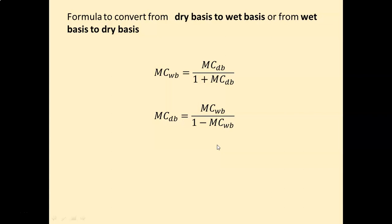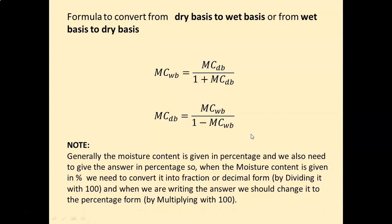This second equation was derived by cross-multiplying the first. One suggestion: you don't need to remember both formulas — just remember one, and you can find the other. If dry basis is given, find wet basis, and if wet basis is given, find dry basis.